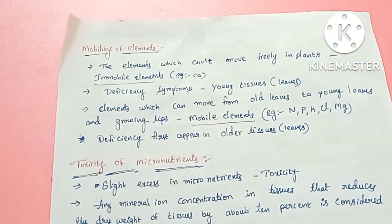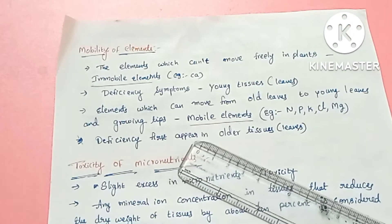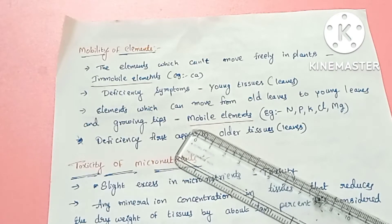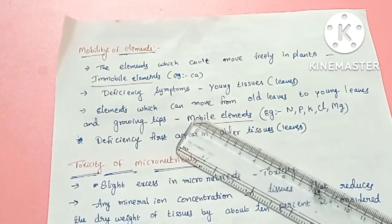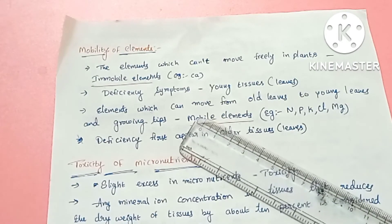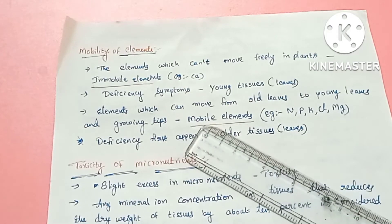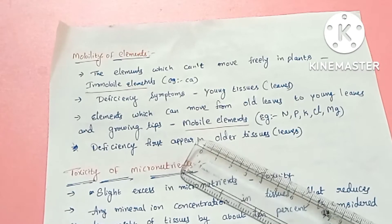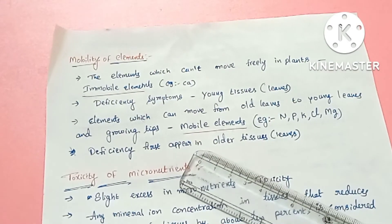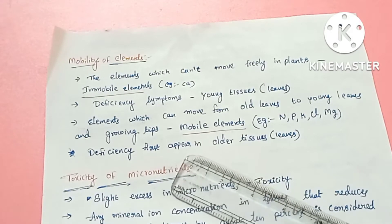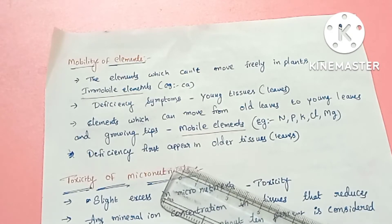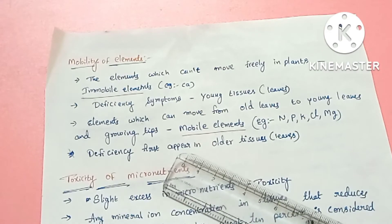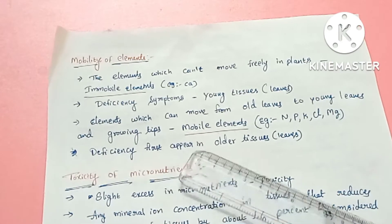The next concept is mobility of elements. When elements are used in plants, they can move through the plant. This is related to the concept of translocation of mineral ions. Elements that are easily translocated move from older parts to newer parts of the plant.